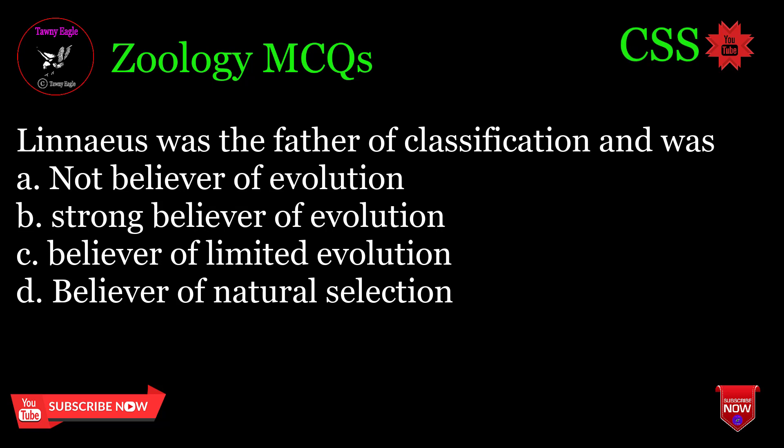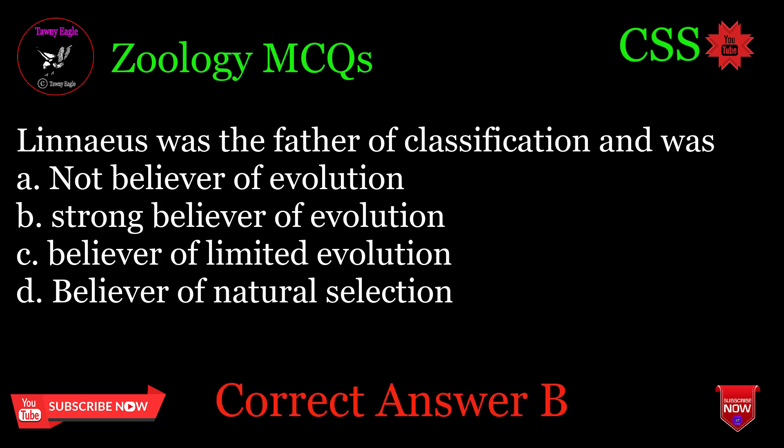Linnaeus was the father of classification and was: A. Not a believer of evolution, B. A strong believer of evolution, C. A believer of limited evolution, D. A believer of natural selection. Correct answer: B.